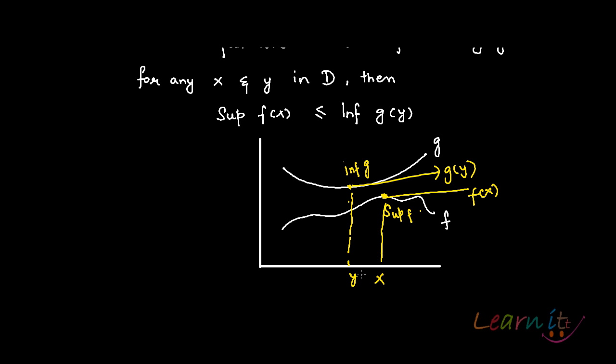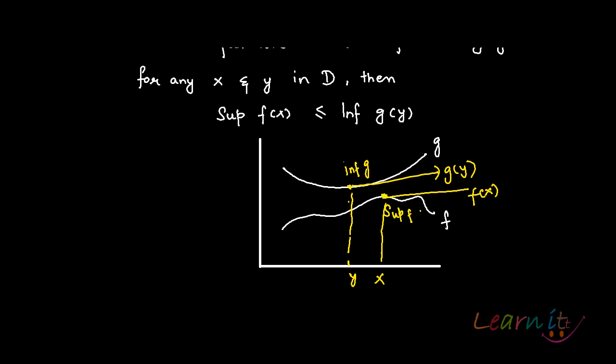This is, say, x and this is y. So we are trying to say that infimum of g will always lie above the supremum of f, because f is always below g, and hence this will happen.